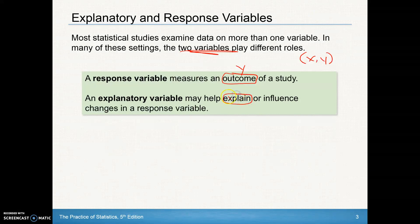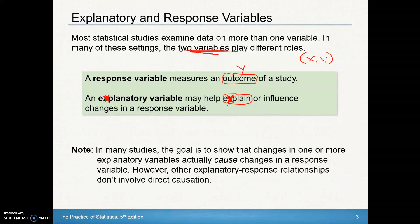A way to remember it: you can see the letter x in the word 'explain,' and explanatory variables go on the x-axis. In many studies the goal is to show that changes in explanatory variables actually cause changes in a response variable — but be very careful about that. There might be other explanatory-response relationships that don't involve direct causation, and there might be lurking variables involved.